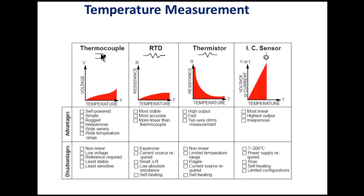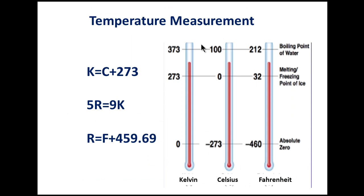Which thermocouple has the highest sensitivity? Thermistor has a Negative Temperature Coefficient (NTC), meaning as temperature increases, resistance decreases. IC sensor has the most linear response, highest output, and is inexpensive. This covers temperature measurement — different temperature measuring devices, their characteristics and applications.